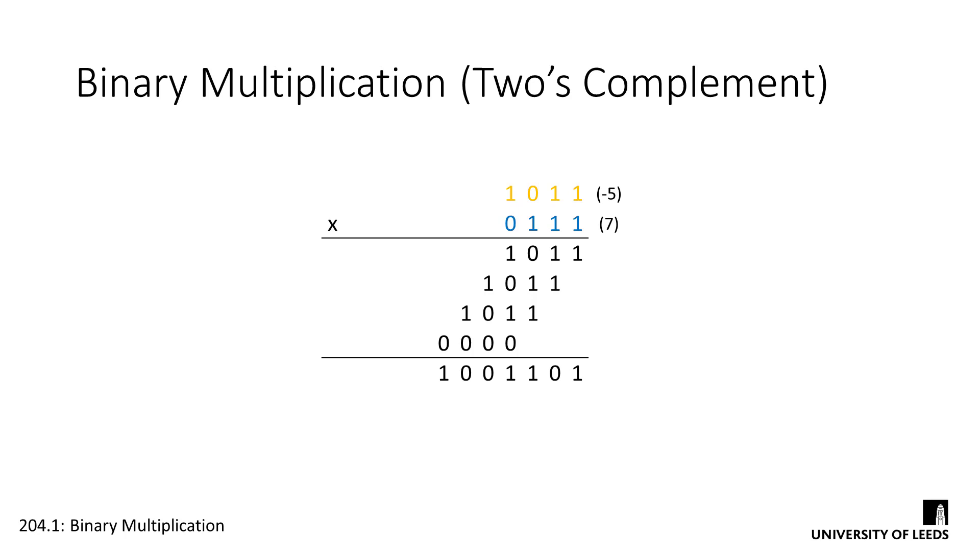we're multiplying minus 5 and 7, but the answer we get here is minus 51, which isn't even vaguely related to the two input numbers. The same process simply doesn't work without any alteration.